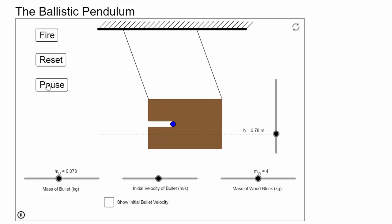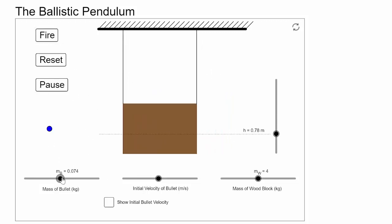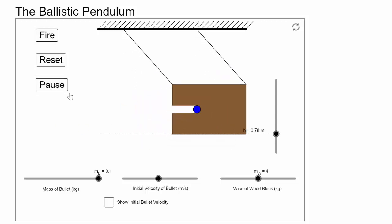So we fire it again and it goes up. And so in this experiment, we're going to be combining our understanding of the conservation of energy and our understanding of the conservation of momentum. So we're going to pull these two ideas together. And so if we fire this and we see that at the very top of its path, it gets to a height of about 0.78 meters.